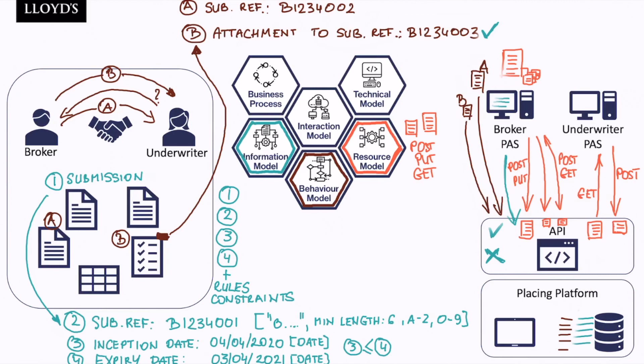But what happens next is the behavior rules kick in, and there are checks to be performed to ensure that there exists a submission record this document can be attached to by checking the underlying placing platform records. This returns an error as such submission does not exist.